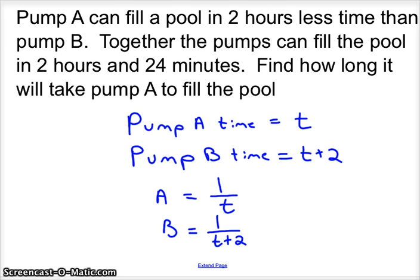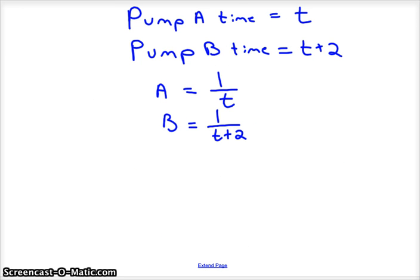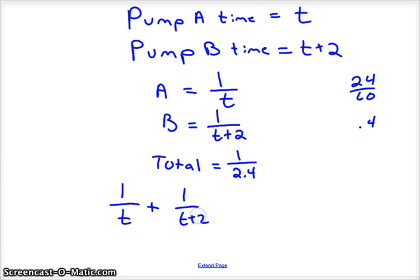All right, so we know that it takes two hours and 24 minutes for them working together. Well, 24/60 is 0.4 hours, so we got to convert the minutes to hours. And so we also know that your total speed together is one job in 2.4 hours. So we've got an equation: we've got 1/t for pump A plus the speed of pump B has to match the speed of them working together.